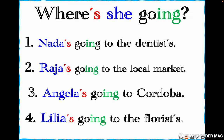Where's she going? — Now we answer with girls' names. Nada's going to the dentist's — 'dentist's' means the dentist's office or shop; the apostrophe-s indicates the place. Raja's going to the local market. Angela's going to Cordoba — a city in Spain. Lilia's going to the florist's — the shop where they sell flowers. Let's repeat: 'Where's she going?' — Nada's going to the dentist's, Raja's going to the local market, Angela's going to Cordoba, Lilia's going to the florist's.